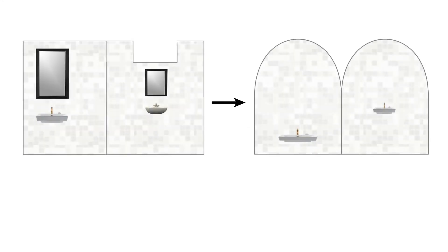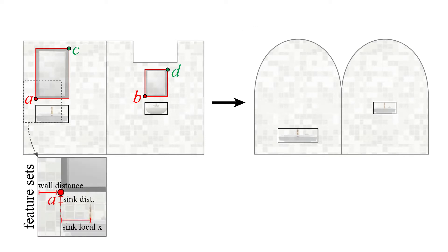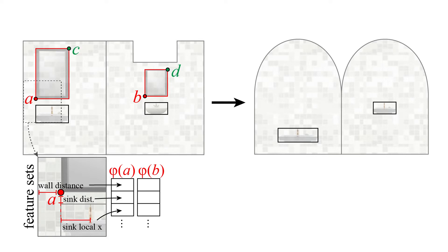Our method operates on the bounding boxes of placed shapes, shown in red. The bounding boxes of the example placements are sampled with a fixed set of points. Here we use two points for illustration, namely the lower left and upper right corners of the bounding box. The relation of a point to the surrounding geometry is expressed with simple geometric relationships, such as the distance to a boundary or the position in the local coordinate frame of a nearby object. These relationships form the feature set of a point.